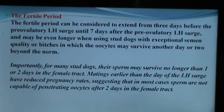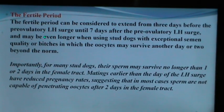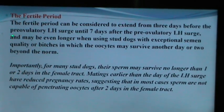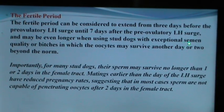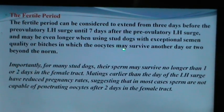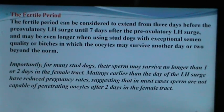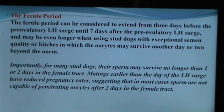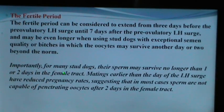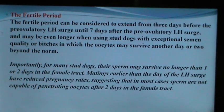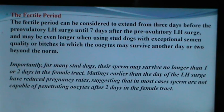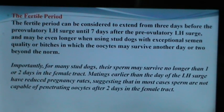The fertile period for the bitch extends from 3 days before the preovulatory LH surge until 7 days after, and possibly longer when using stud dogs with exceptional semen quality. For many dogs, sperm may survive no longer than 1 to 2 days in the female tract. Matings earlier than the day of LH surge have resulted in reduced pregnancy rates, suggesting sperm are not capable of penetrating oocytes after 2 days in the female tract.